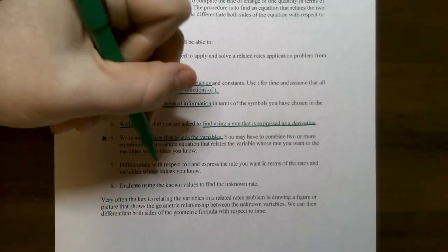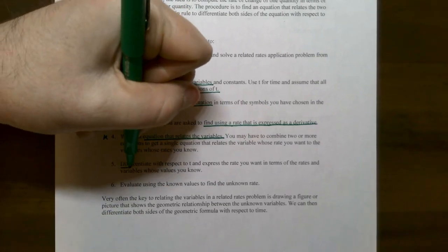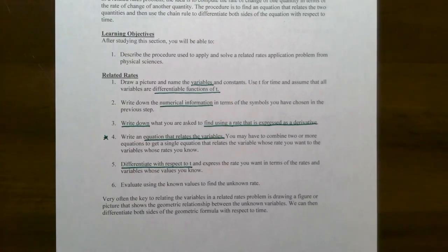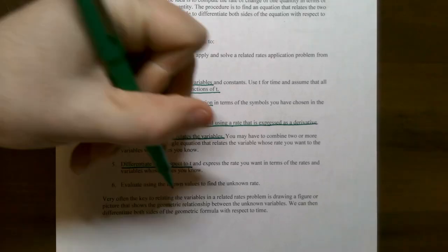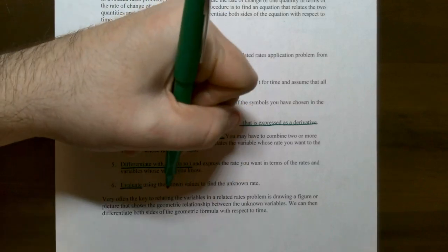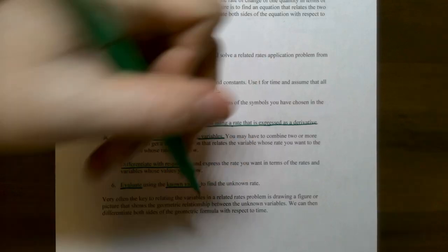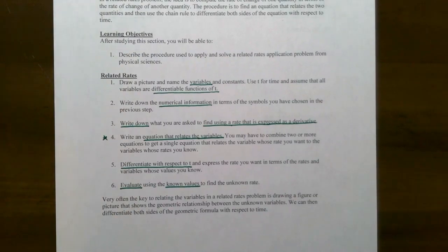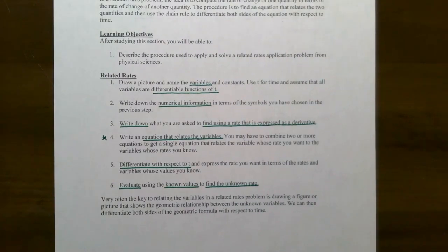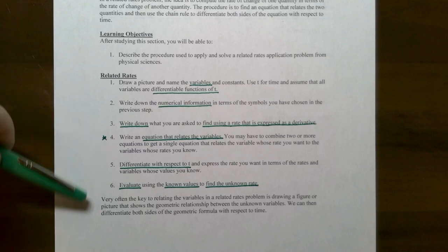Once you have the equation, differentiate the equation with respect to time. All the variables are functions of time, so differentiate with respect to t. Once you have the derivative, substitute in the numerical information you found earlier to find the unknown rate of change. All related rates problems will always follow these six steps.